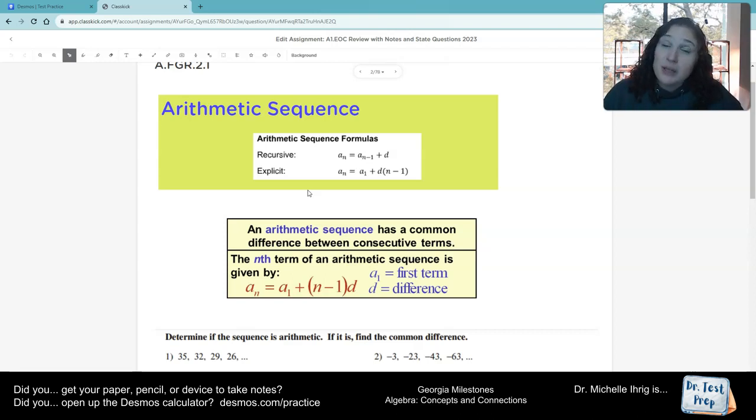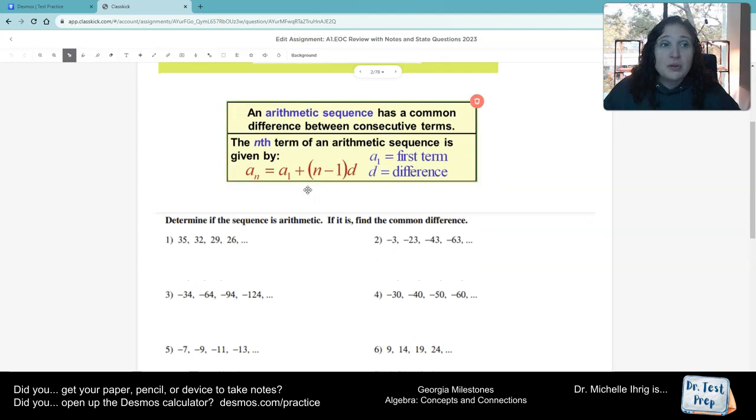The explicit formula is used when you need to figure out, like, if I did this sequence for 1,527 numbers, what number would I get? And that's when you would use the explicit.